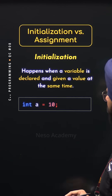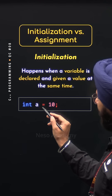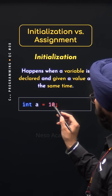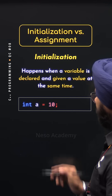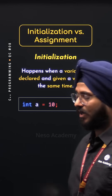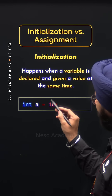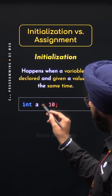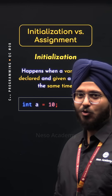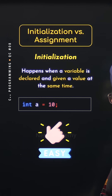For example, here variable a is declared and it is initialized with value 10. I'm saying this variable is initialized with value 10 because this value is provided at the time of declaration only. So this is initialization.